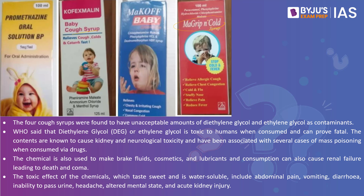These syrups were manufactured in India by a Haryana-based company, Maiden Pharmaceuticals. The World Health Organization issued a word of caution against these baby syrups, and the Indian government started a probe into their manufacturing. The WHO linked these four cough syrups to acute kidney injuries. When samples were tested, they were found to contain unacceptable amounts of diethylene glycol and ethylene glycol as contaminants. The WHO stated that diethylene glycol and ethylene glycol are toxic to humans when consumed and can prove fatal.